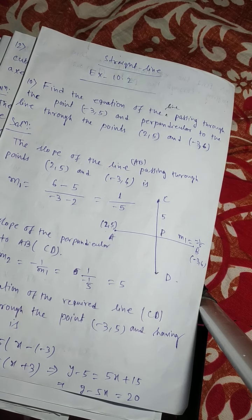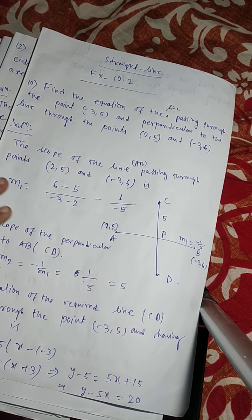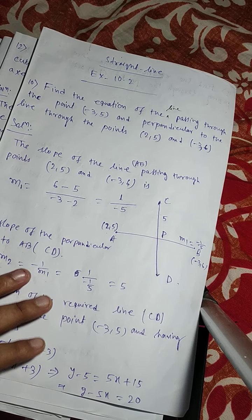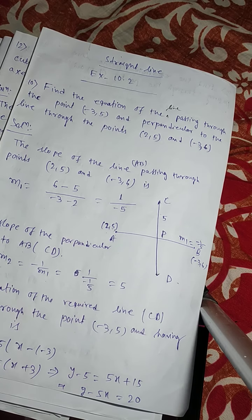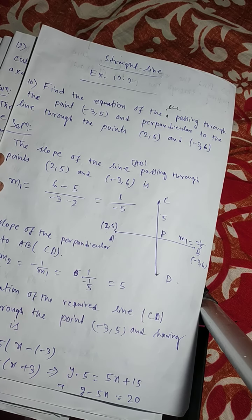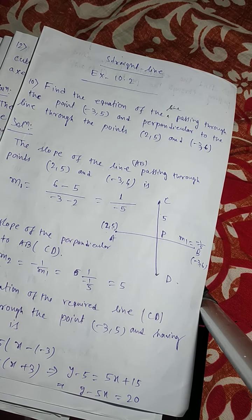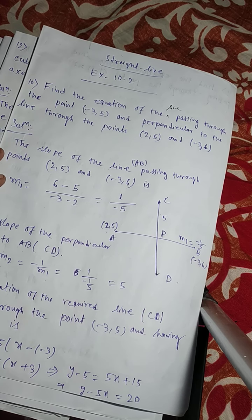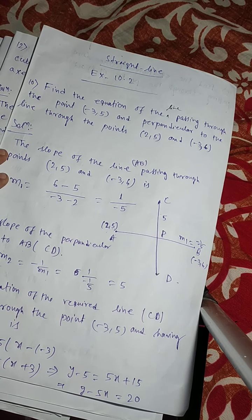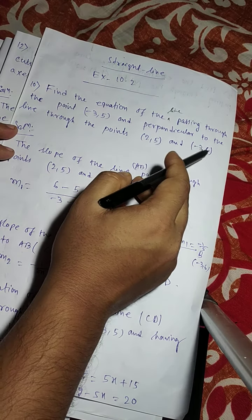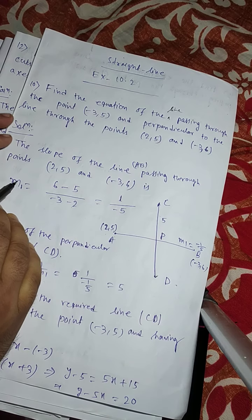Namaste students. Today I am going to discuss exercise 10.2, question number 10: Find the equation of the line passing through the point (-3, 5) and perpendicular to the line through the points (2, 5) and (-3, 6).